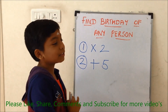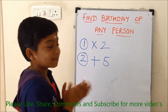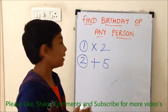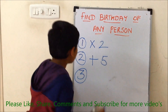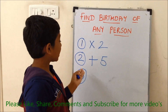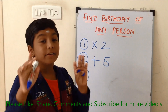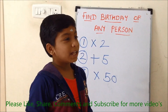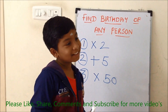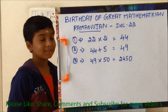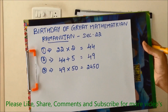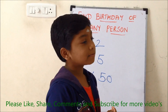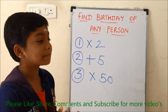Mom, have you finished it? Yeah, I am doing it baby. Okay mom. Now the third step is we need to multiply the answer of the second step by 50. Have you done it mom? Yes baby. And then, mom, can you add the number of the month to the number? Yeah sure baby, I am doing it. It is done.